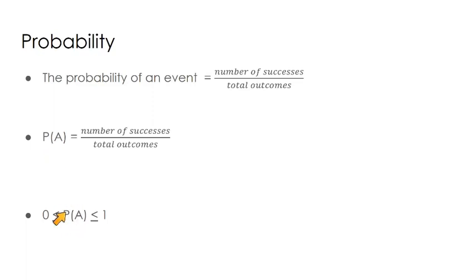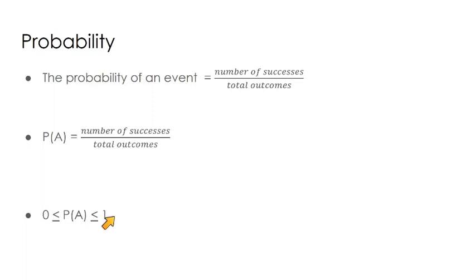The probability of any event is going to be between zero and one. Our probability is zero if it's impossible for something to happen, and our probability is one if it's a certainty — 100%. We can't have more than 100% probability or less than zero percent, so probability always falls between zero and one, or between zero percent and one hundred percent.